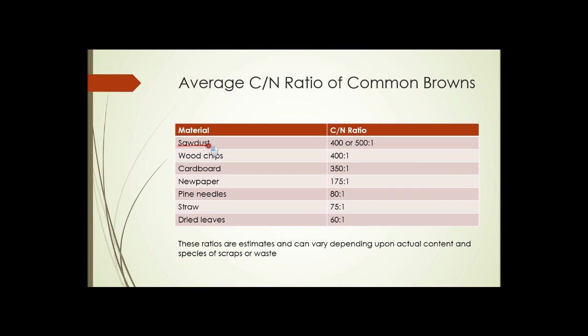First is sawdust, 400 or 500 to 1 carbon to nitrogen ratio. So sawdust itself would decompose quite slowly if it didn't have other things mixed with it. Wood chips, essentially bigger pieces of sawdust, about the same ratio. Cardboard, 350 to 1. Newspaper, 175 to 1. Pine needles, 80 to 1. Straw, 75 to 1. And dried leaves, 60 to 1.